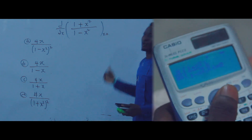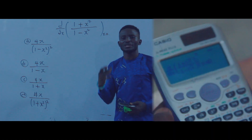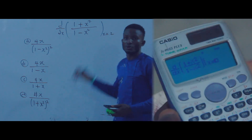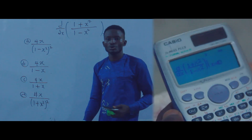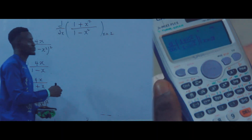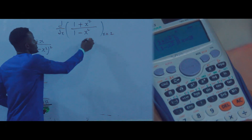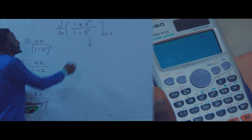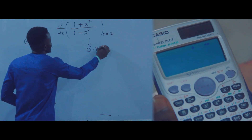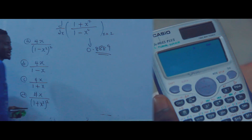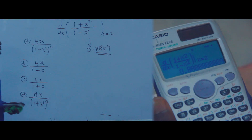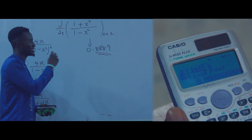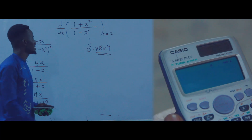Now move to the value of x. You can substitute any value — 2, 3, or any number — but I prefer using 2. Put in 2, then press equals. You will observe that the answer is 0.8889.